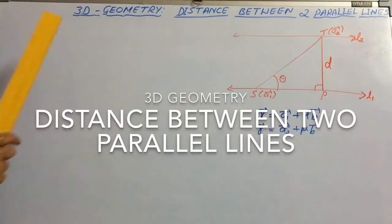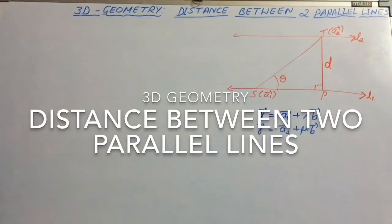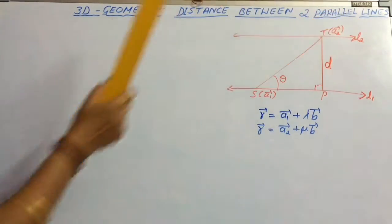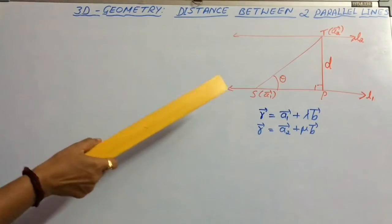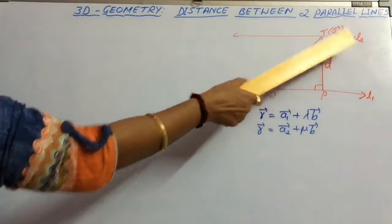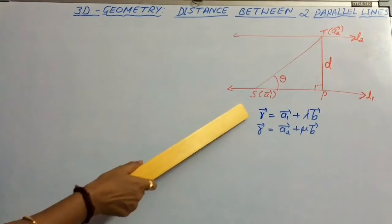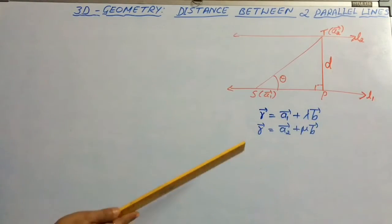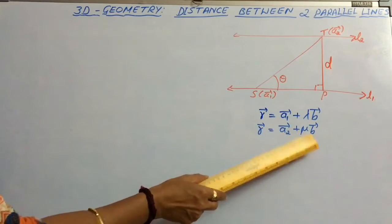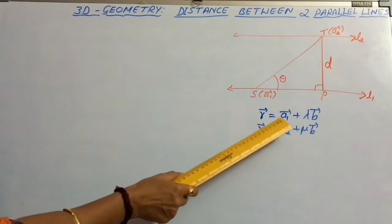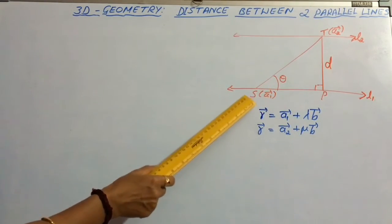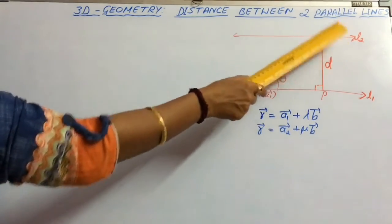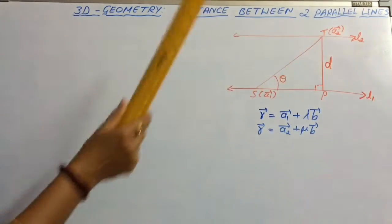Let us consider 3D geometry. Under 3D geometry, consider distance between two parallel lines. Let us consider two parallel lines L1 and L2 with equation R = A1 + lambda b and R = A2 + mu b, where A1 is the position vector of S, a point on L1, and A2 is the position vector of T, a point on L2.